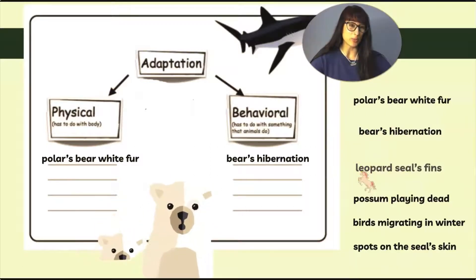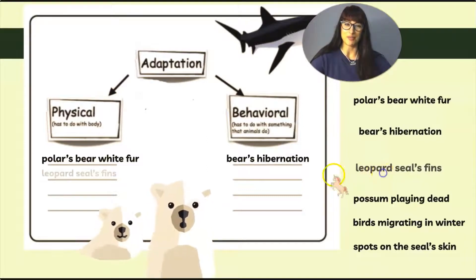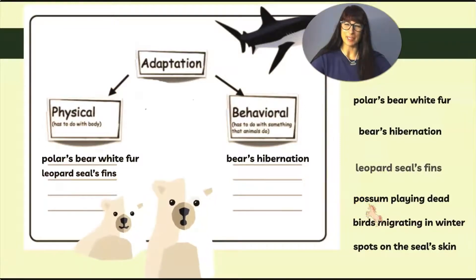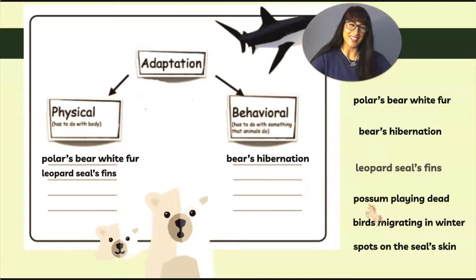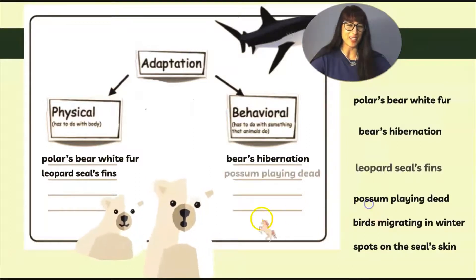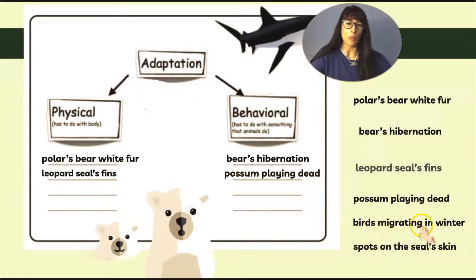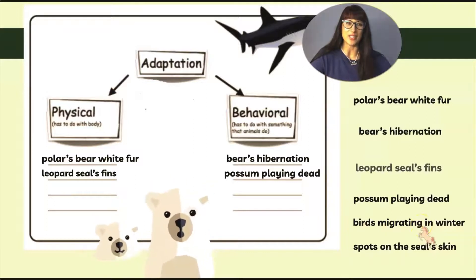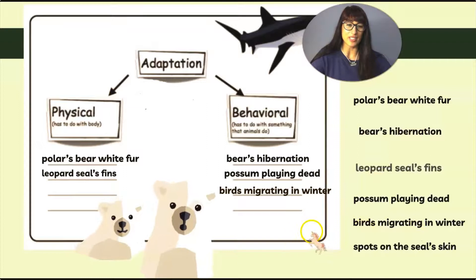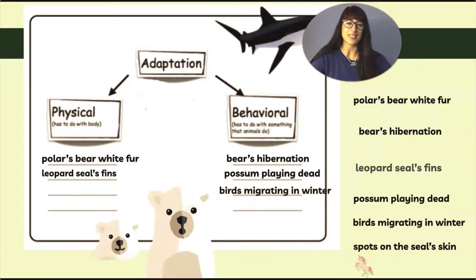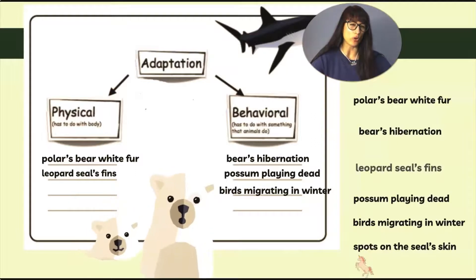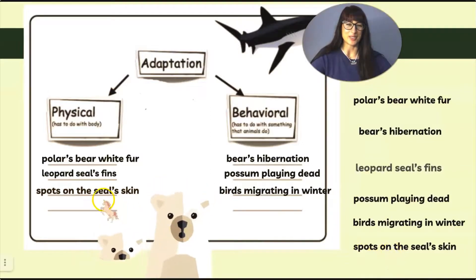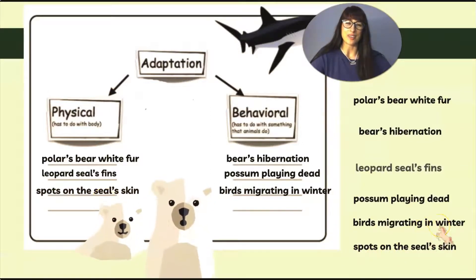Leopard seals' fins are part of their body and help them swim, so that goes into physical adaptation. Possum playing dead — that's something they do — behavioral adaptation. Birds migrating in winter is definitely not a part of the body, so that's behavioral adaptation. Spots on the seal's skin is something visible on their body, not something they do, so that goes into the physical adaptations column. Great job everyone!